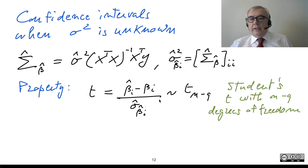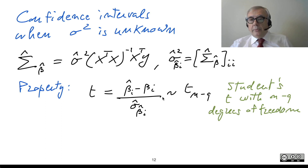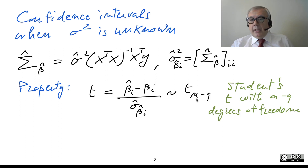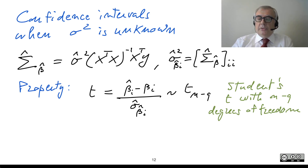So if I go for a kind of standardization, I do not find a standardized normal variable, but something that is also standardized — a realization of a Student's t distribution. This is the basis to derive a 95% confidence interval also when you do not know sigma-square.